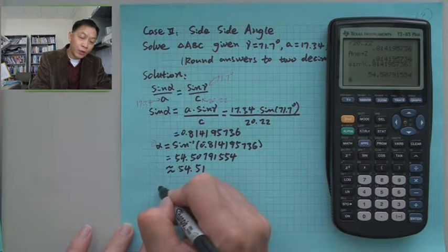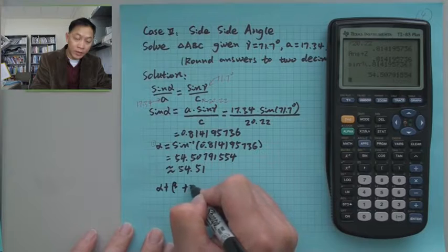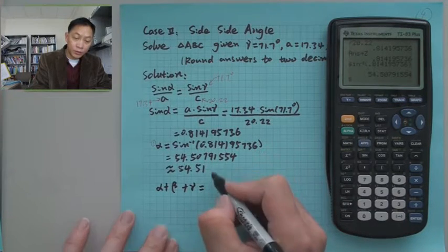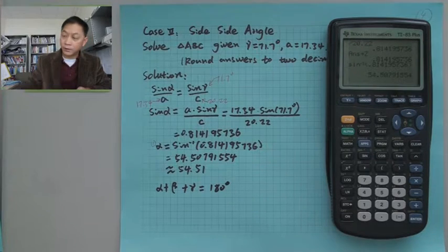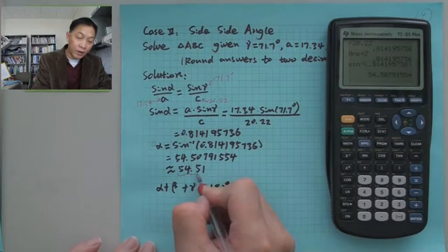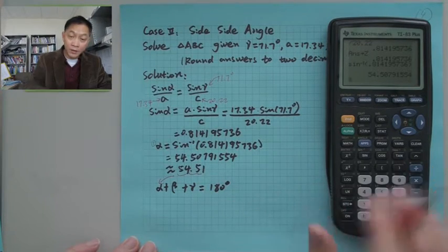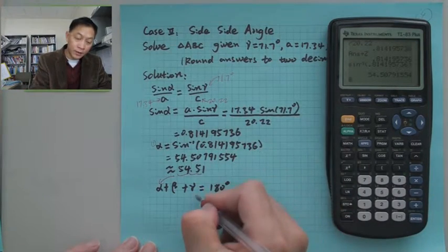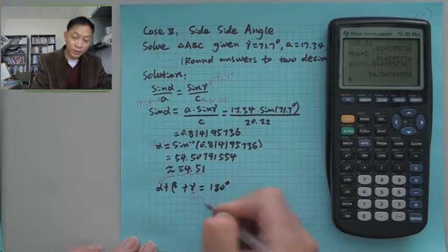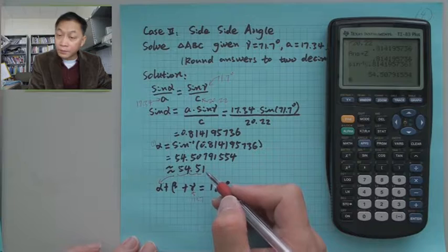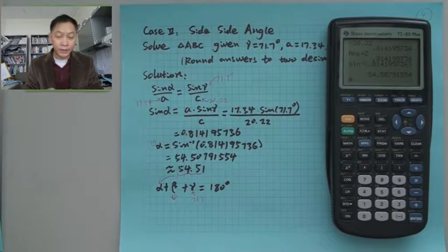Now, we know alpha plus beta plus gamma is 180 degrees. And then, we have our alpha is here. Do we have a gamma? Right here. Let's see. Here's value, 71.7. And then, beta comes out.